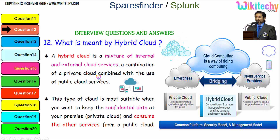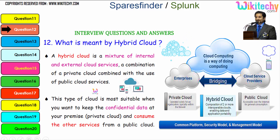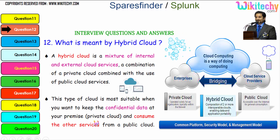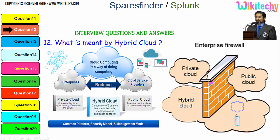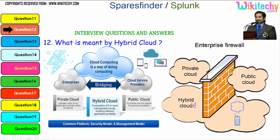By definition, a hybrid cloud is a mixture of internal and external cloud services — a combination of a private cloud combined with the use of public cloud services. This type of cloud is most suitable when you want to keep confidential data at your premises and consume other services from a public cloud. You can see the firewall perspective: private cloud is really secure with a specific firewall, whereas over a public cloud you don't have many specific firewalls to control intruders. Over a hybrid cloud, it is partial — you have some secure data inside the firewall and the rest outside.